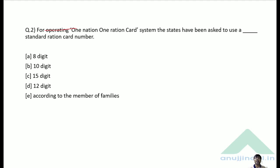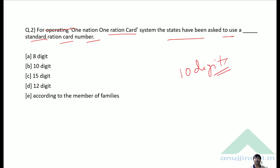Question 2: For operating the One Nation One Ration Card system, states have been asked to use a standard ration card number with how many digits? All states have been asked to use a bilingual format with information in English and Hindi, and a 10-digit ration card number. The correct answer is Option B — 10 digits.